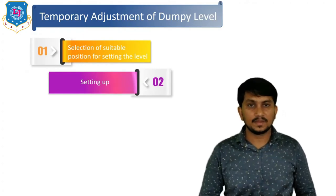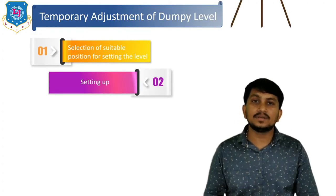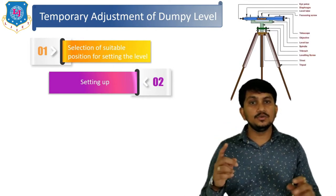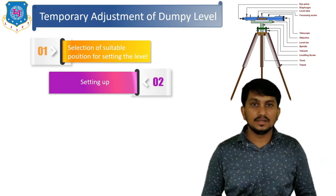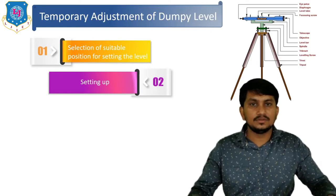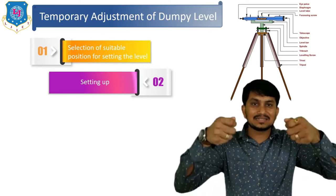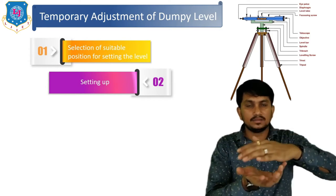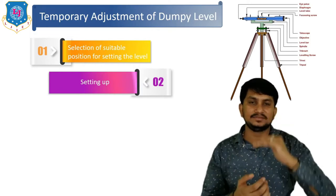The second step is setting up the instrument. After selecting the site, we set up the instrument using a tripod and the dumpy level. The tripod legs should be firmly pressed into the ground, and the height is adjusted so that after installing the dumpy level on it, the eyepiece is exactly at eye level.